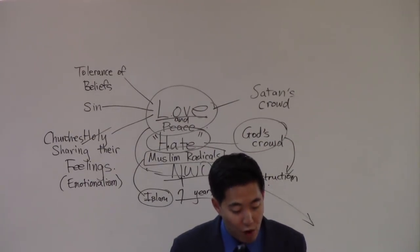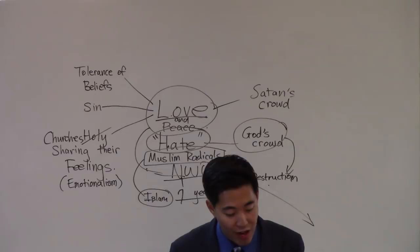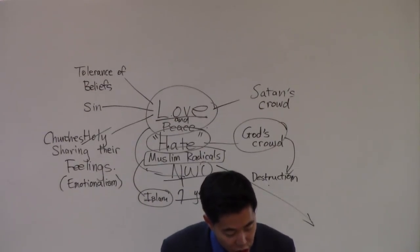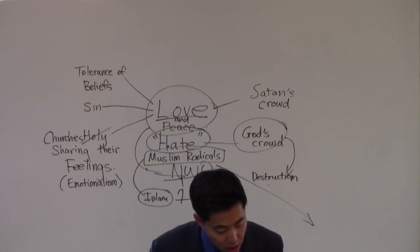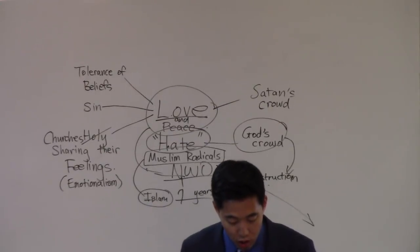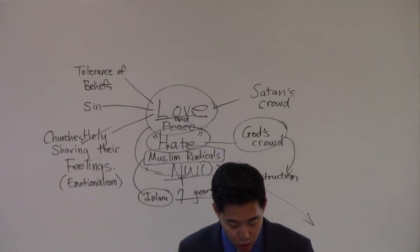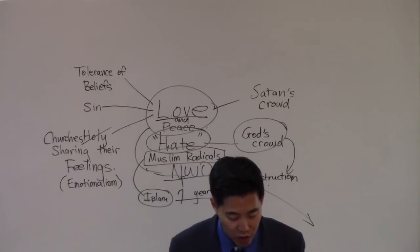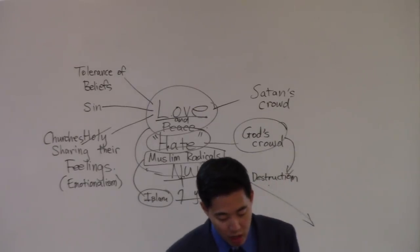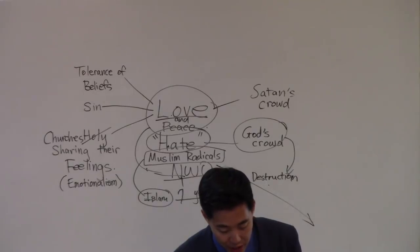Who privately shall bring in damnable heresies, even denying the Lord that bought them, and bring upon themselves swift destruction. See that? They bring upon themselves destructions. Swift destruction. Like real close. Look at verse 3. Verse 2. And many shall fall their pernicious ways, by reason of whom the way of truth shall be evil spoken of. And through covetousness shall they with what? Feigned words. Make merchandise of you, whose judgment now of a long time lingereth not, and their damnation slumbereth not.